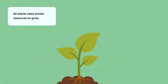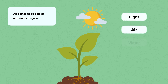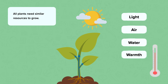All plants need similar resources to grow. Do you remember what these things are? Plants need light, air, water and warmth. Without these things, they will die. Plants also need room or space to grow.